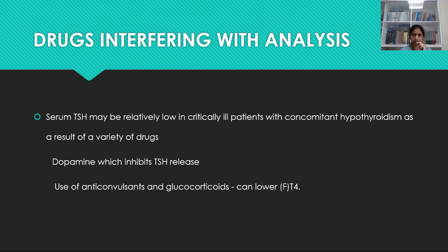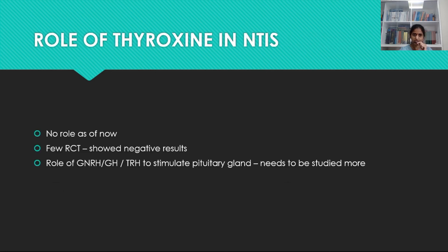What are the drugs interfering with analysis? ICU patients will be on many drugs which can interfere with TSH concentration. For example, dopamine will inhibit TSH release, which in turn may decrease T3 and T4 levels. Use of anticonvulsants and glucocorticoids can lower free T4 levels. While interpreting the thyroid profile report, we need to consider confounding factors like dopamine, anticonvulsants, and steroids. High steroids can decrease TRH expression and decrease the sensitivity of the pituitary gland to TRH. Dopamine will inhibit release of TSH, resulting in decreased T3 and T4 levels.